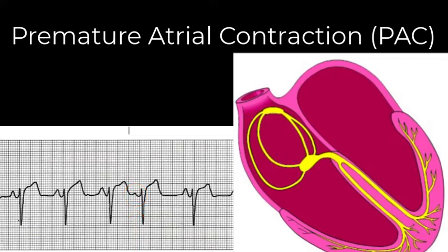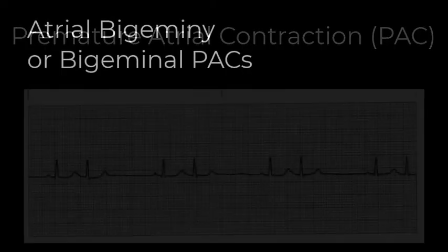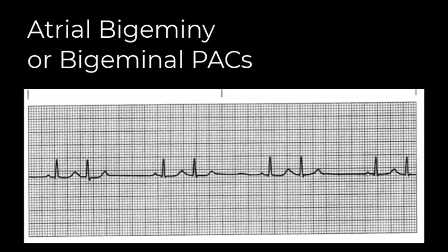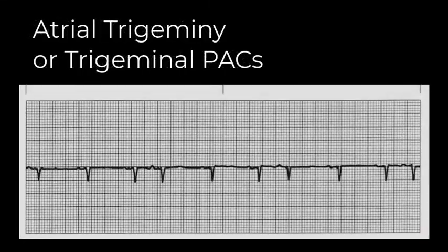In most cases, a PAC will produce a QRS complex that is identical to the normal QRS for that patient, because from the AV node down, electricity follows the same pathway. In atrial bigeminy, every other beat is a PAC. In atrial trigeminy, every third beat is a PAC.